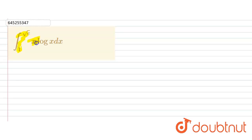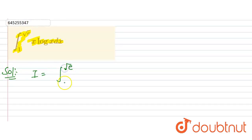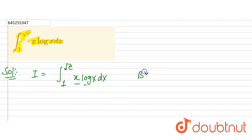Integration of x times log(x) dx, with limits from 1 to √a. So let's solve this question. We have to integrate this, so let I equal to the integral from 1 to √a of x·log(x) dx.